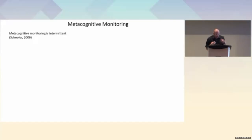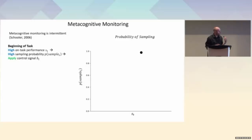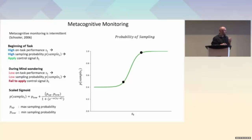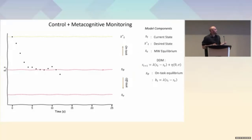The second function is metacognitive monitoring, previously defined as intermittent. The details of how often we check what is on mind are relatively unexplored. I propose that the rate of checking is a probability function: similar to the control function, larger values of S(t) — being on task — correspond to a greater likelihood of knowing what's on mind. As you drift closer toward mind wandering, there is less probability of sampling what is on mind. This probability function, a scaled sigmoid, is bounded between a maximum and a non-zero minimum sampling probability, since even when off-task there's still a chance you'll check what is on mind.